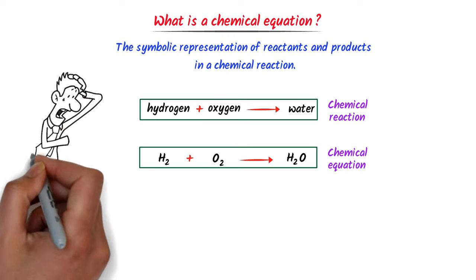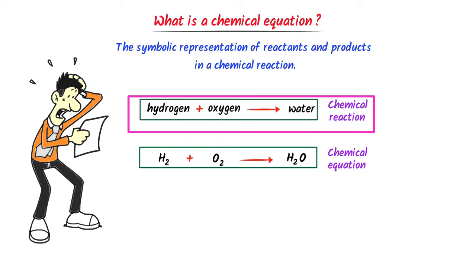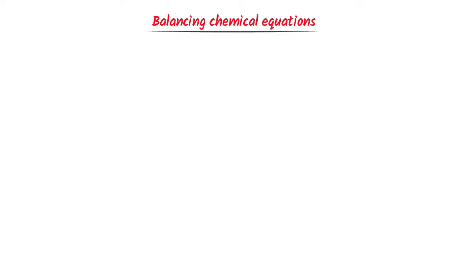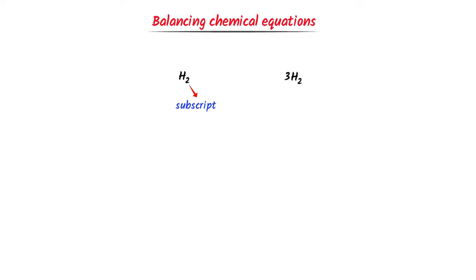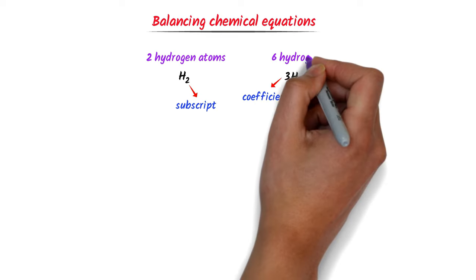Many students do not know the difference between chemical reaction and chemical equation. A chemical reaction is described in words, while a chemical equation uses symbols. Now, how can we balance any chemical reaction? Let me teach you some basic concepts. Consider H₂ and 3H₂ — here, the subscript two means two hydrogen atoms, and the coefficient three means three times H₂, giving six hydrogen atoms.